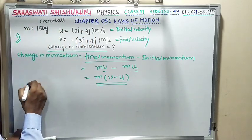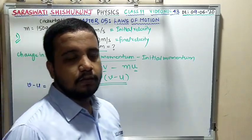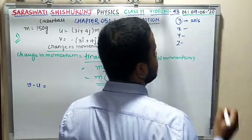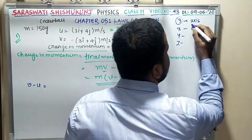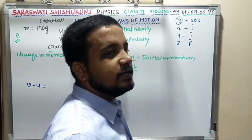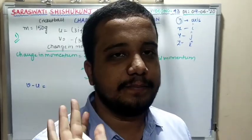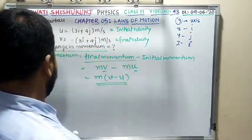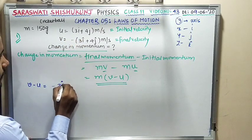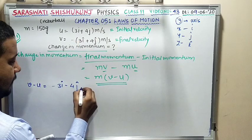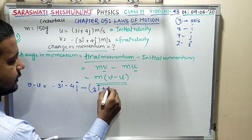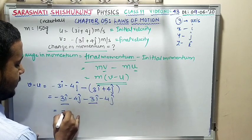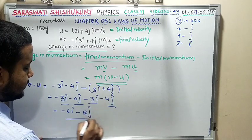I, J, K are unit vectors along the X, Y, Z axes respectively — a unit vector has magnitude 1. V = −3î − 4ĵ and U = 3î + 4ĵ. So V − U = (−3î − 4ĵ) − (3î + 4ĵ) = −6î − 8ĵ m/s.